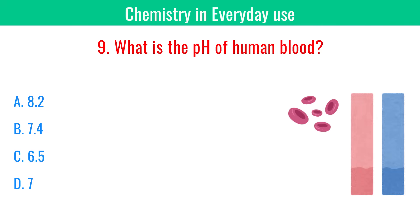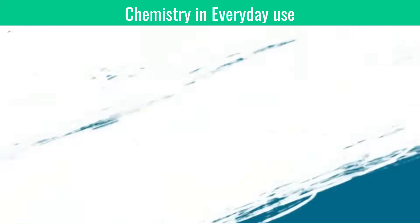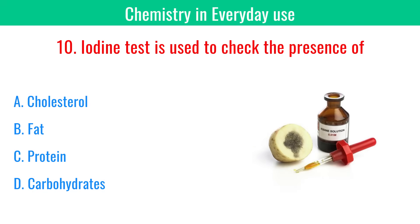What is the pH of human blood? 7.4. The iodine test is used to check the presence of carbohydrates.